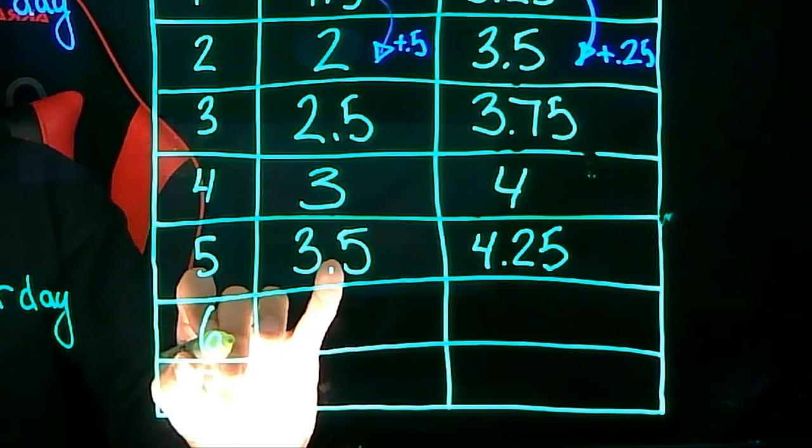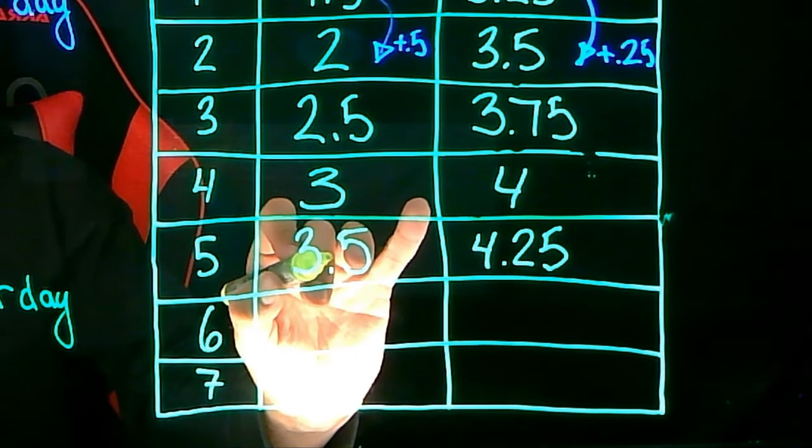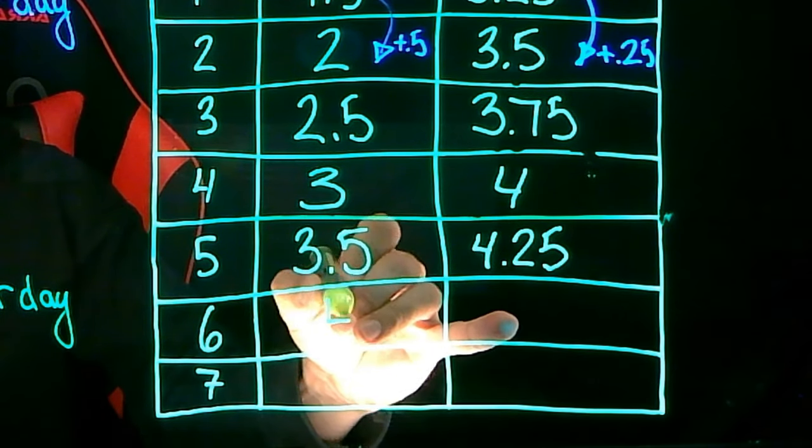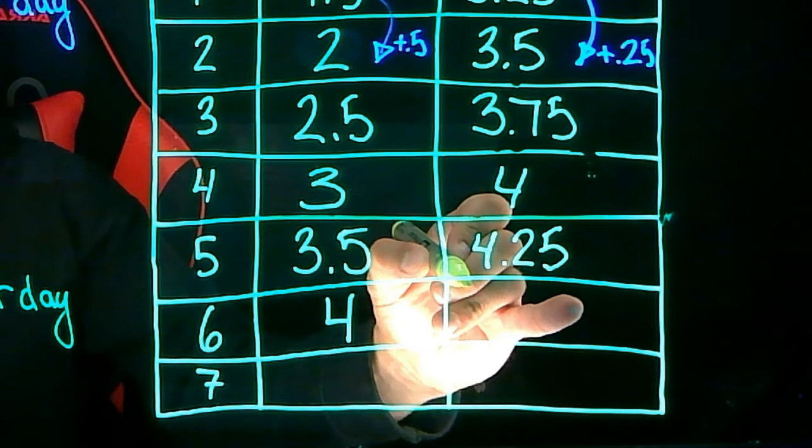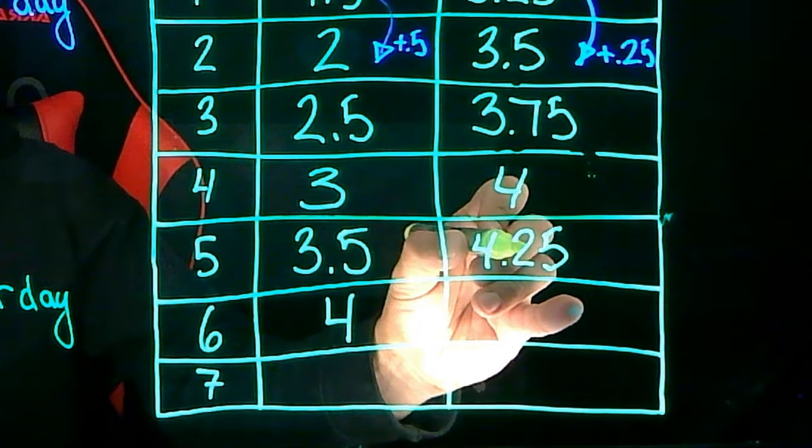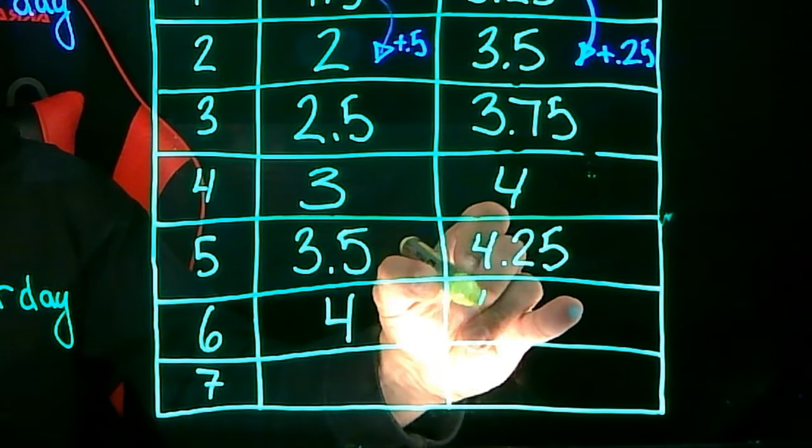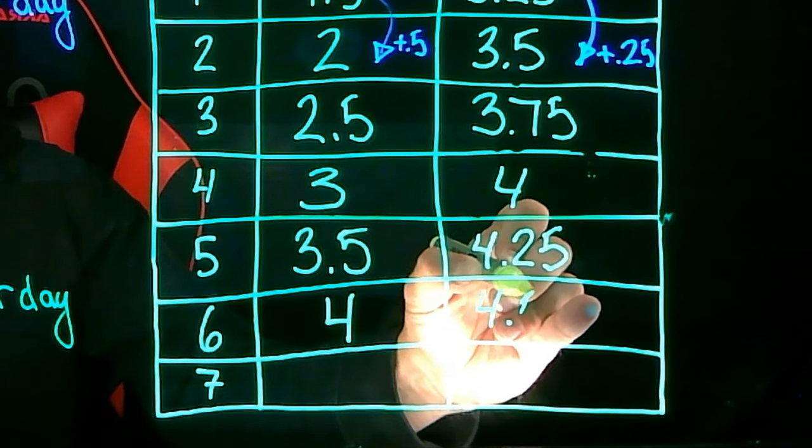On day six, plant A will have a height of 3.5 plus 0.5 or 4 inches tall. And plant B will have a height of 4.25 plus 0.25 or 4.5 inches tall.